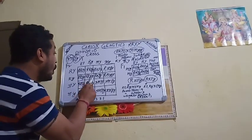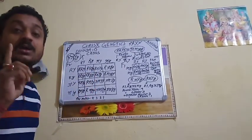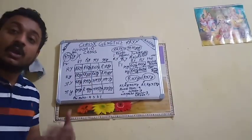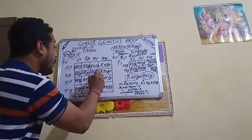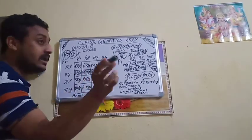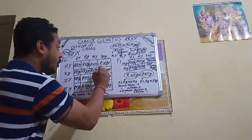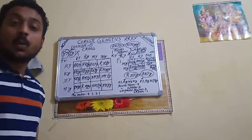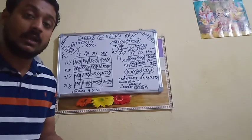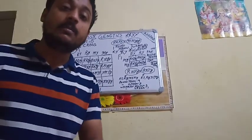Capital R Capital R, small y small y — here comes the twist. It will become round green because both y are small, meaning no Capital Y is present, so green color sustains. Capital R small r, Capital Y small y — round yellow again, both capitals are dominant. Capital R small r, small y small y — round green, because there is no Capital Y, so small y will only express its color which is green. Small r small r, small y small y — this becomes wrinkled green: no Capital R so no round, no Capital Y so no yellow.